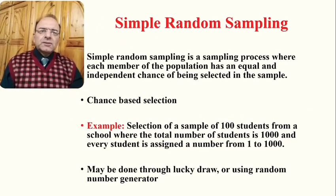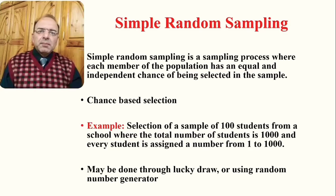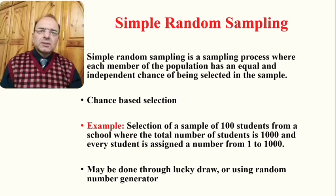Simple random sampling is a sampling process where each member of the population has an equal and independent chance of being selected in the sample. It is mainly chance-based selection — there is no purposive element involved in the selection of a particular member or element of the population. It is purely chance-based.